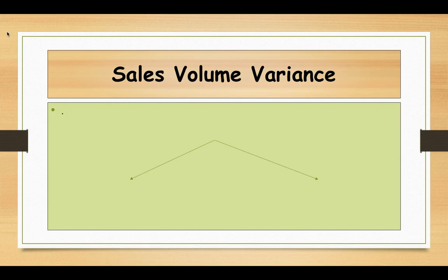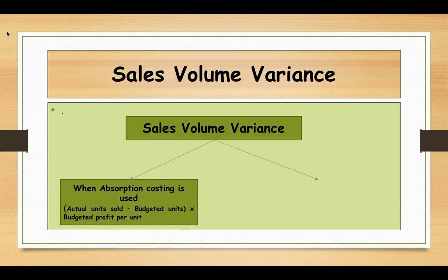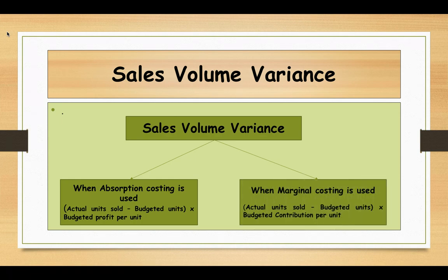Now we're going to see the sales volume variance. Sales volume variance means comparing the budgeted number of units with the actual number of units sold — you will get either an adverse or favorable volume variance. To convert that into money value, we need to consider the costing system: under absorption costing, multiply the difference by budgeted profit per unit; under marginal costing, multiply by contribution per unit.